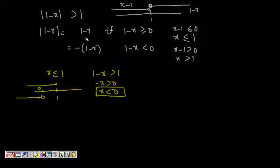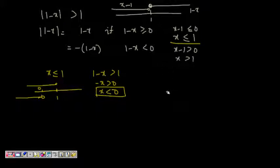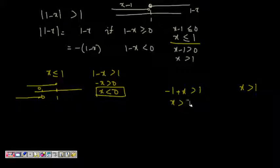For the second part, we substitute minus 1 plus x is greater than 1, and our constraint is x is greater than 1. So x is greater than 2, and intersecting with x greater than 1, the solution is x greater than 2.